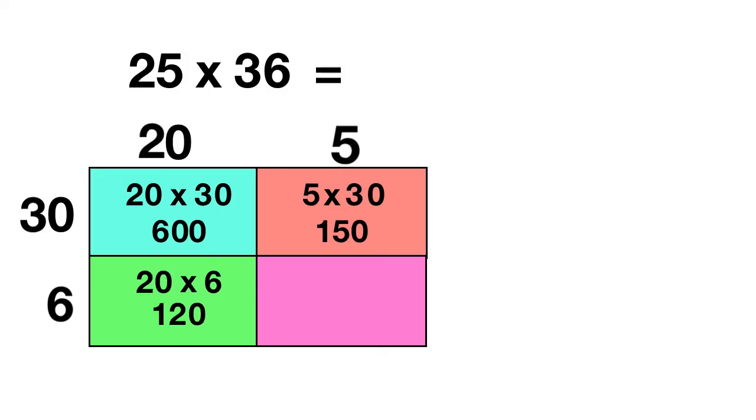Finally, in the purple box, we can multiply 5 times 6, and we know 5 times 6 is 30.